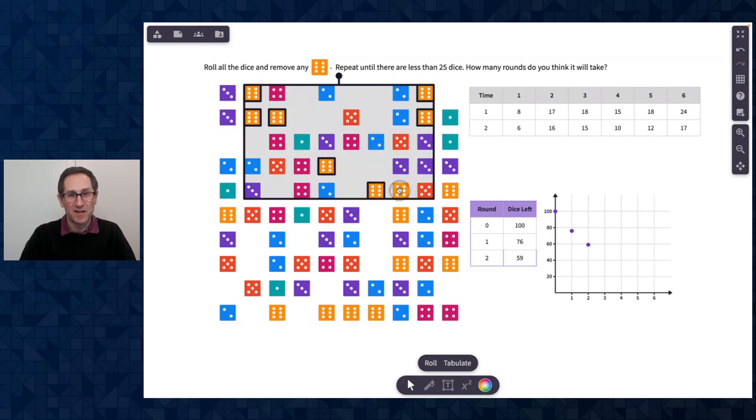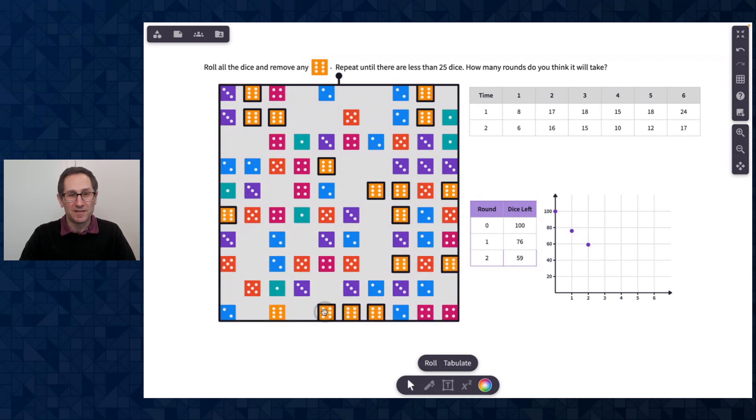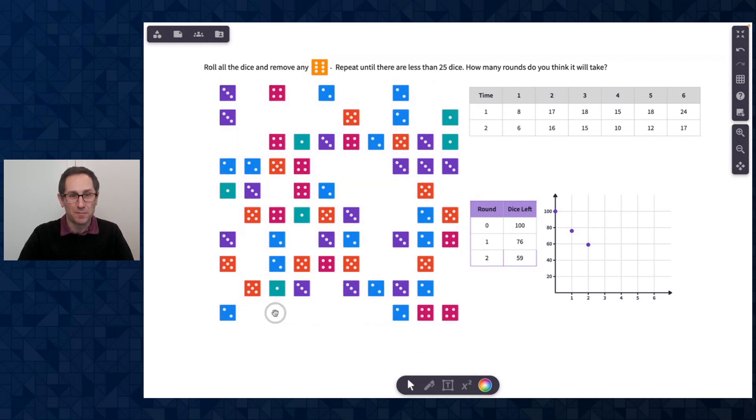So now I'm going to go through and click on all of these sixes. I might ask students here to make a prediction as to how many rounds they think it'll take to get to 25 or less. Maybe I could have them make a prediction on their paper, on Polypad, however you want to run this activity with your classes.